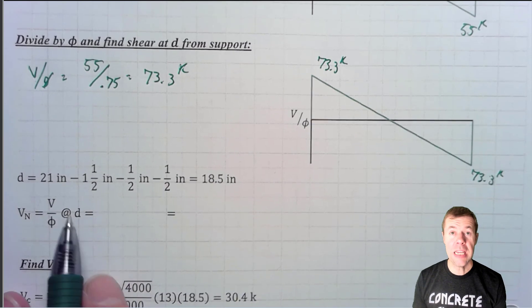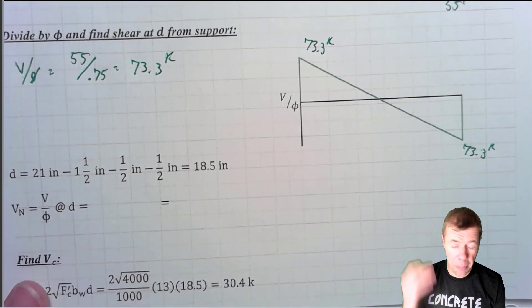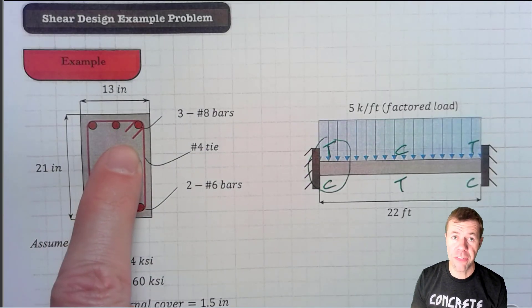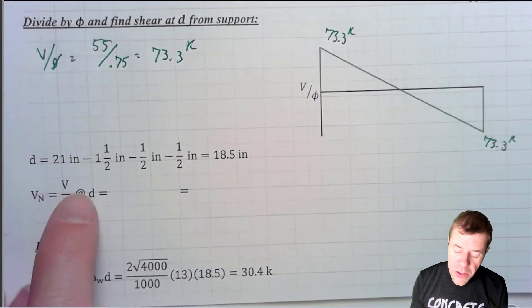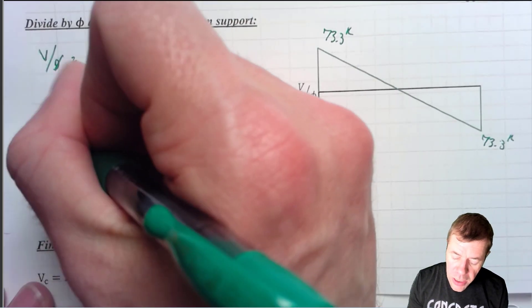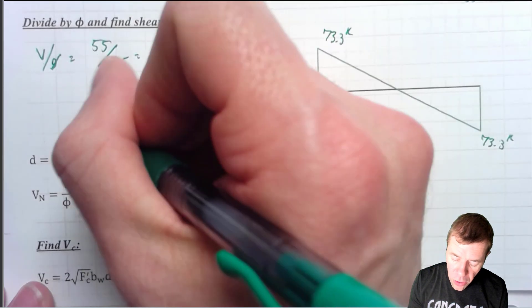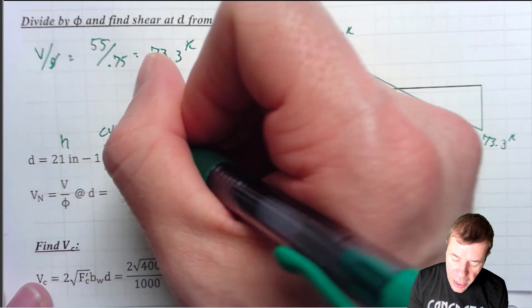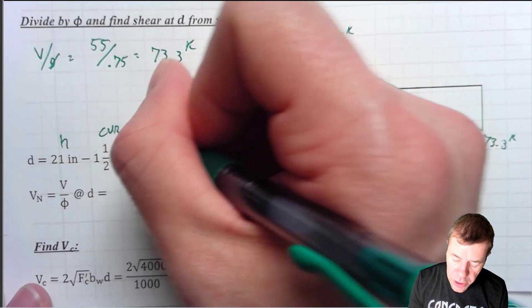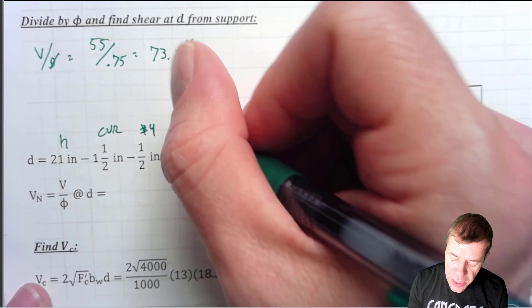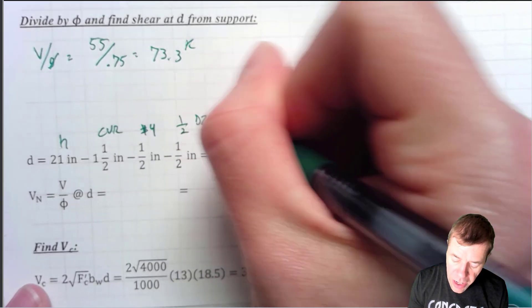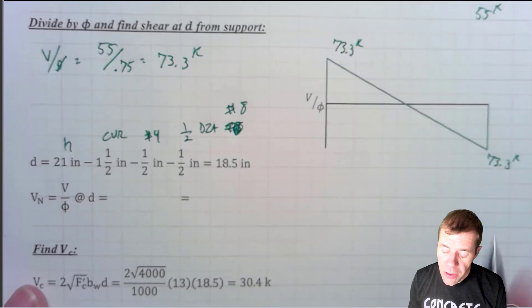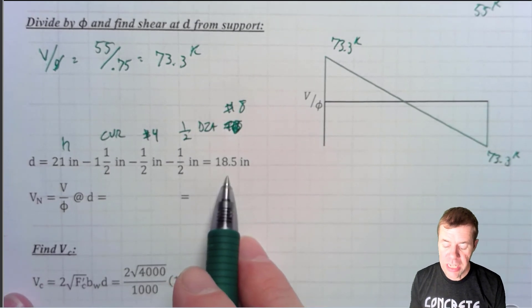Now we find our D, and remember that's to the top bar — the three number eights at the very top of our beam. D equals H minus cover minus the diameter of a number four bar minus one-half the diameter of a number eight bar. That value is equal to 18.5 inches.